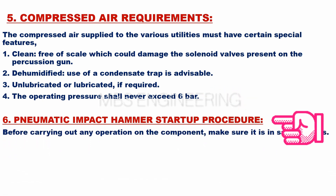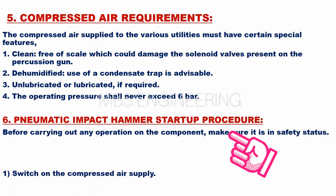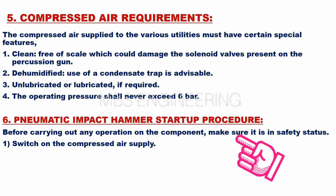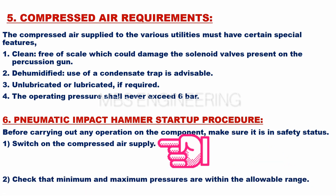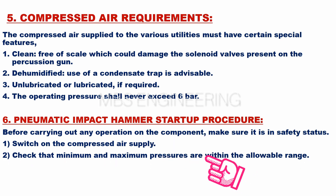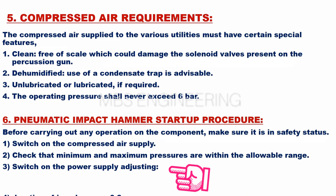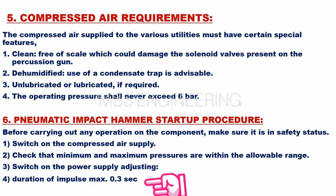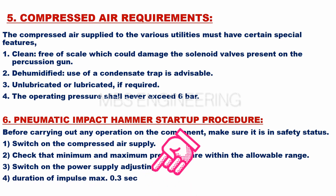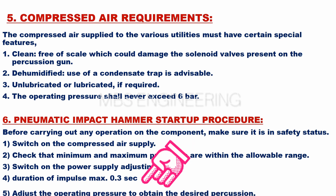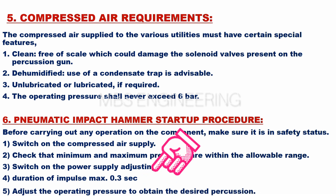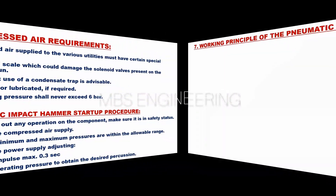Before carrying out any operation on the component, make sure it is in safety status. The first step is to switch on the compressed air supply. The second step is to check that minimum and maximum pressures are within the allowable range. The third step is to switch on the power supply. The fourth step is the duration of impulse — maximum 0.3 seconds. The fifth step is to adjust the operating pressure to obtain the desired percussion.